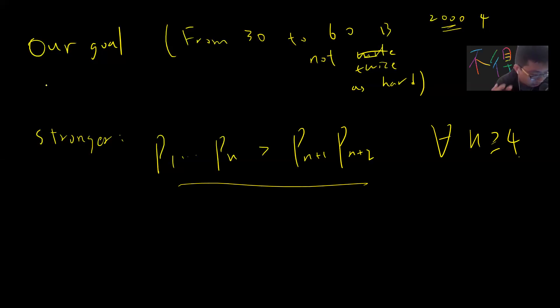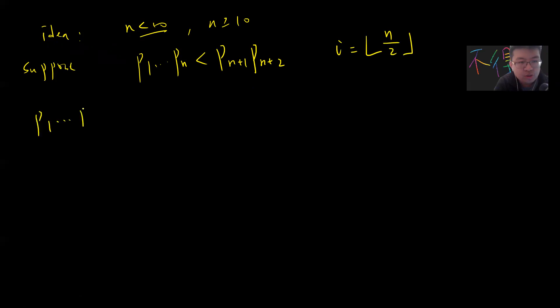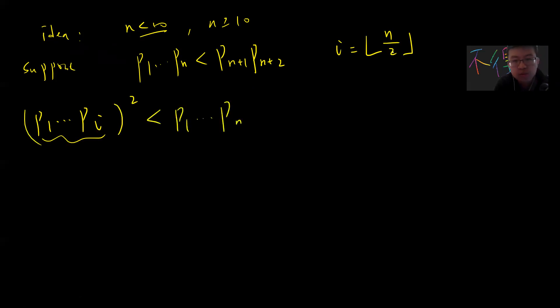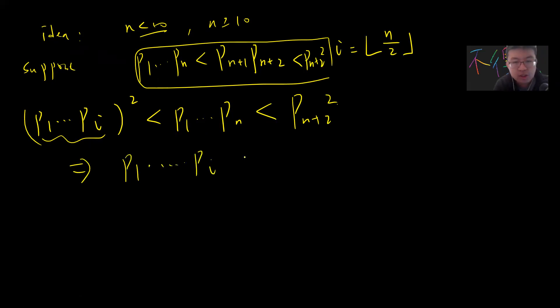Let's start the proof. The idea is to check the equality holds for small n, and then consider n greater than or equal to 10. Suppose p_1 times p_2 up to p_n is less than p_{n+1} times p_{n+2} — assume this for contradiction. Let i be the floor of n divided by 2. Then p_1 up to p_i, squared, is less than p_1 up to p_n, which is less than p_{n+1} times p_{n+2}. Taking square roots gives p_1 times p_2 up to p_i is less than p_{n+2}.